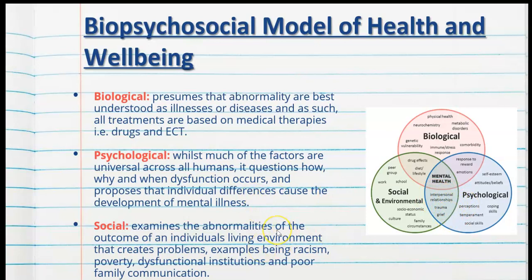The social factor of the biopsychosocial model examines abnormalities as the outcome of an individual's living environment that creates problems. Examples include racism, poverty, dysfunctional institutions and poor family communication. All of these things may cause or exacerbate a mental health disorder, with the source coming from the social part of the model. Other social factors may include peer group, diet and lifestyle where there's a social aspect, family circumstances, culture, work and of course school.